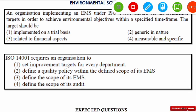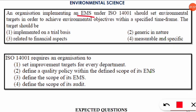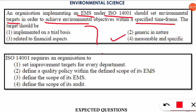The next question is analytical: an organization implementing an Environmental Management System (EMS) under ISO 14001 should set environmental targets in order to achieve environmental objectives within a specified time frame. What kind of targets should these be? The correct option is option number four — the targets should be measurable and specific in time.